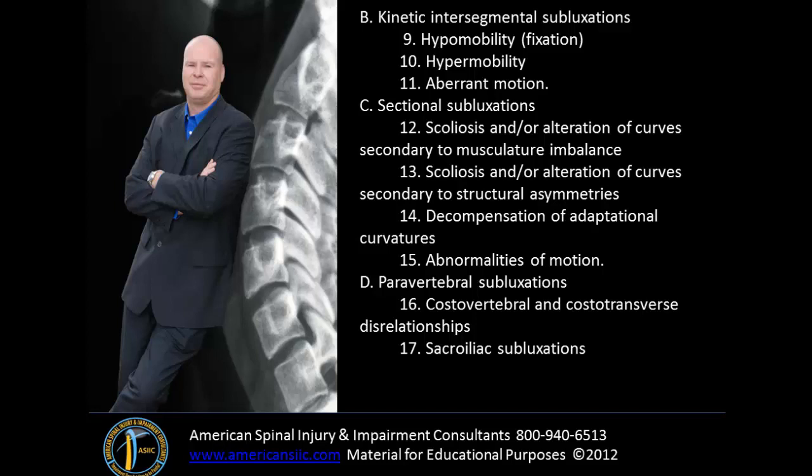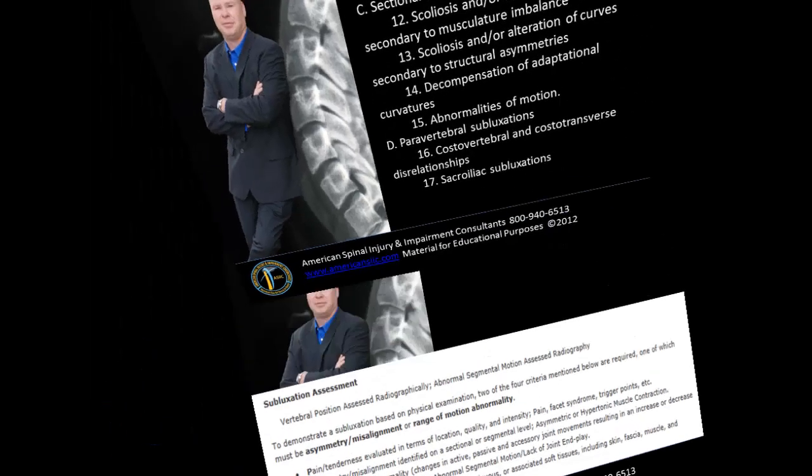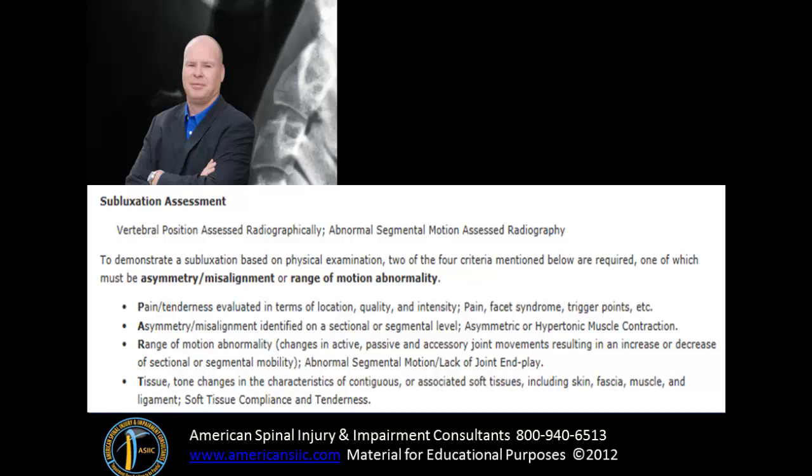There are three main ways we determine spinal subluxations. To improve the clinical healthcare science of chiropractic, we need to stay as objective as possible — with that which can readily be measured, as opposed to that which is highly subjective. We have a PART exam to demonstrate a subluxation based on physical examination, for which two of the four criteria are required, one of which must be asymmetry/misalignment or range of motion abnormality. However, the PART exam is highly subjective and does not perform well in terms of intra- or inter-practitioner reliability.